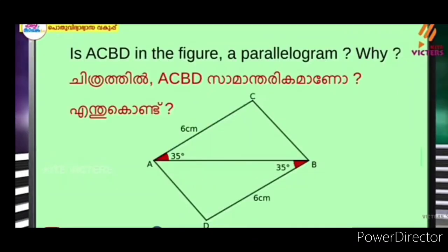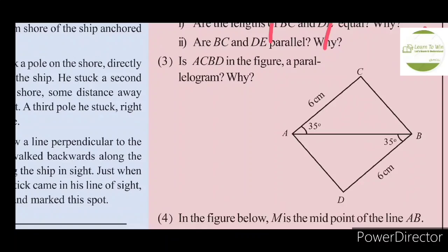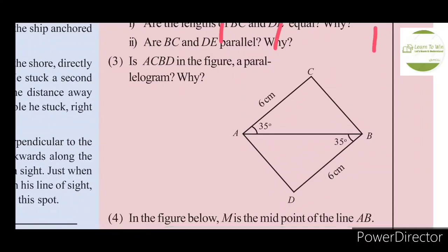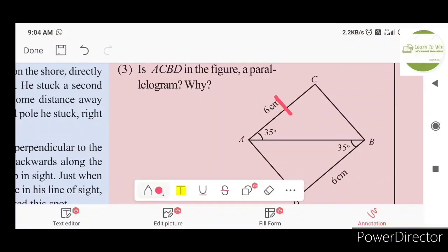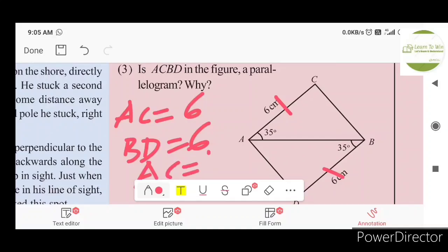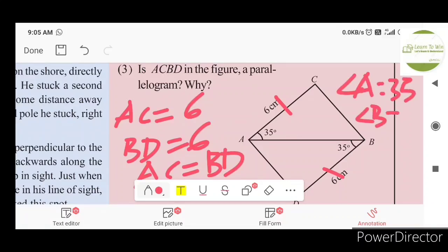This is the last assignment. This is a parallelogram ABCD. I have seen it as a parallelogram ABCD. This parallelogram ABCD equals 6cm. If you know this, AC is equal to BD. Angle A is equal to B.